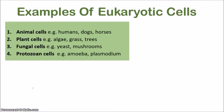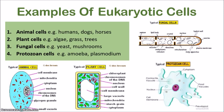Let's look at some eukaryotic cells. The main types are: animal cells — found in humans, dogs, horses, and every other animal on Earth; plant cells — algae, grass, trees; fungal cells — including yeasts and mushrooms; and protozoan cells, also known as protists, which include amoeba and plasmodium. Remember, plasmodium is the organism that causes malaria. All four of these are examples of eukaryotic cells with membrane-bound organelles. Animal and plant cells only form multicellular organisms, fungal cells can exist as both unicellular and multicellular, and protozoan cells are the only unicellular eukaryotic cells.